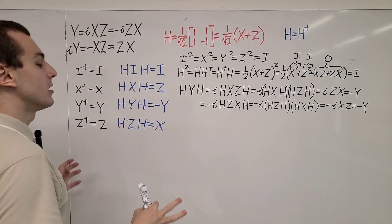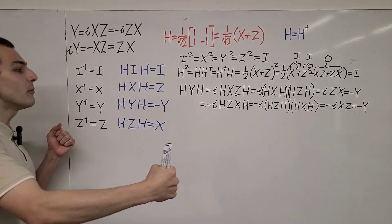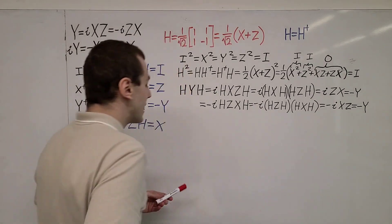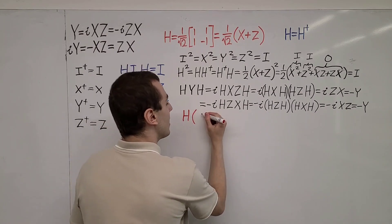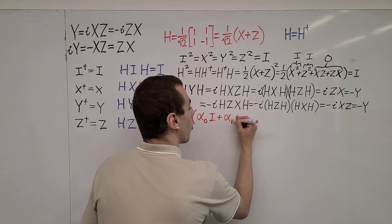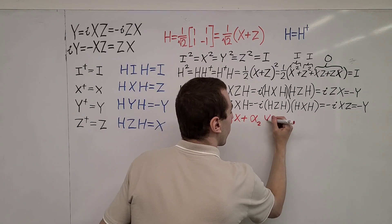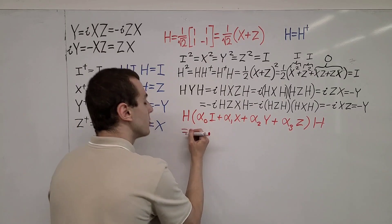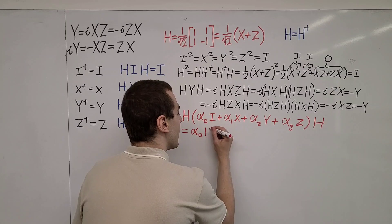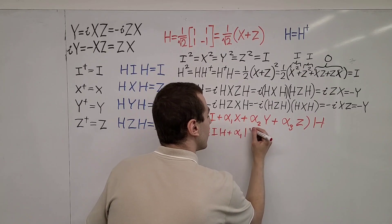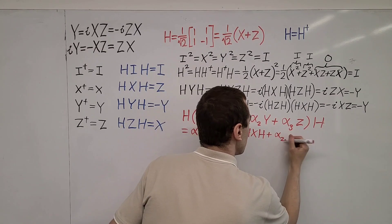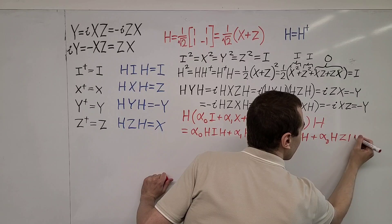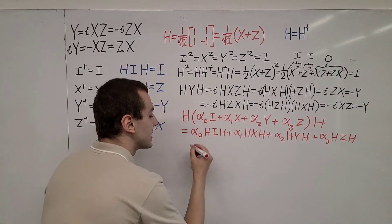Now I want to take a general linear combination of all the Pauli matrices and sandwich that between the two Hadamard gates. So we take H times (α₀ I + α₁ X + α₂ Y + α₃ Z) times H. We can distribute the Hadamards to get α₀ (H I H) + α₁ (H X H) + α₂ (H Y H) + α₃ (H Z H), and then use the properties we've established.